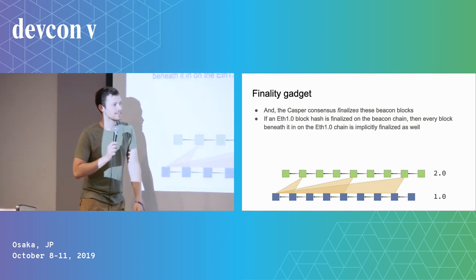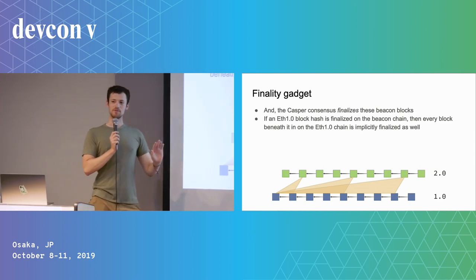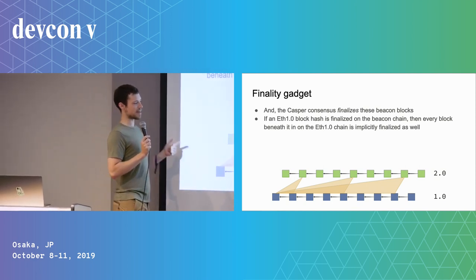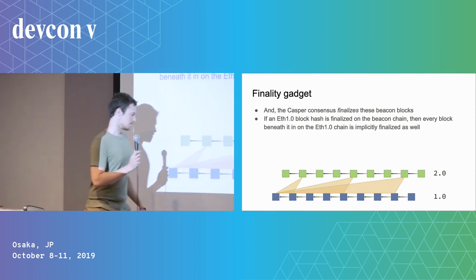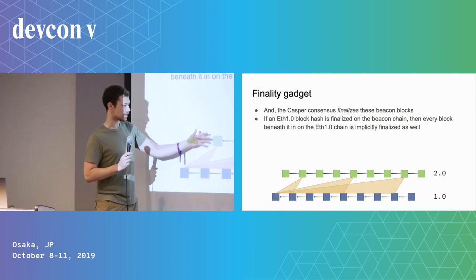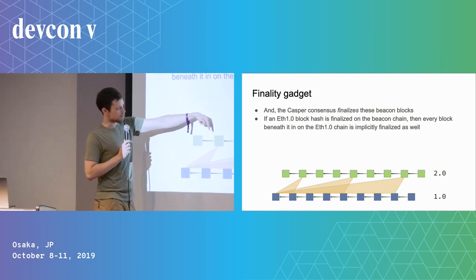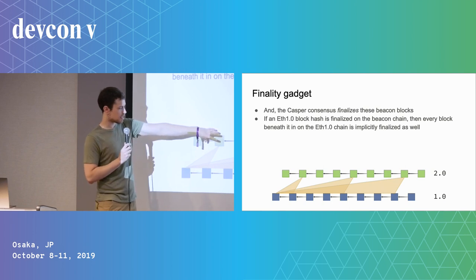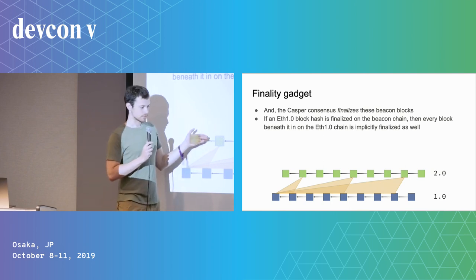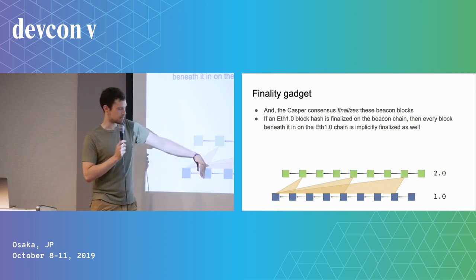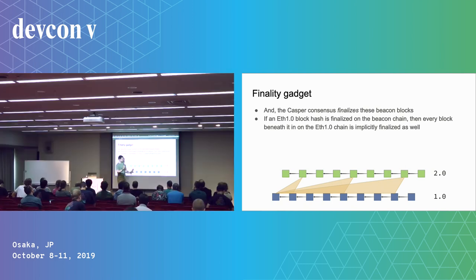This ties it all together: the beacon chain learns about ETH1 blocks. As we finalize the beacon chain, we implicitly finalize those ETH1 blocks. For example, once we say 'the head of the ETH1 chain was block X' and that beacon block is finalized, block X is finalized by reference, and because of the chain's nature, everything before it is also finalized. We keep increasing finalized suffixes of the ETH1 chain as we finalize more beacon blocks.